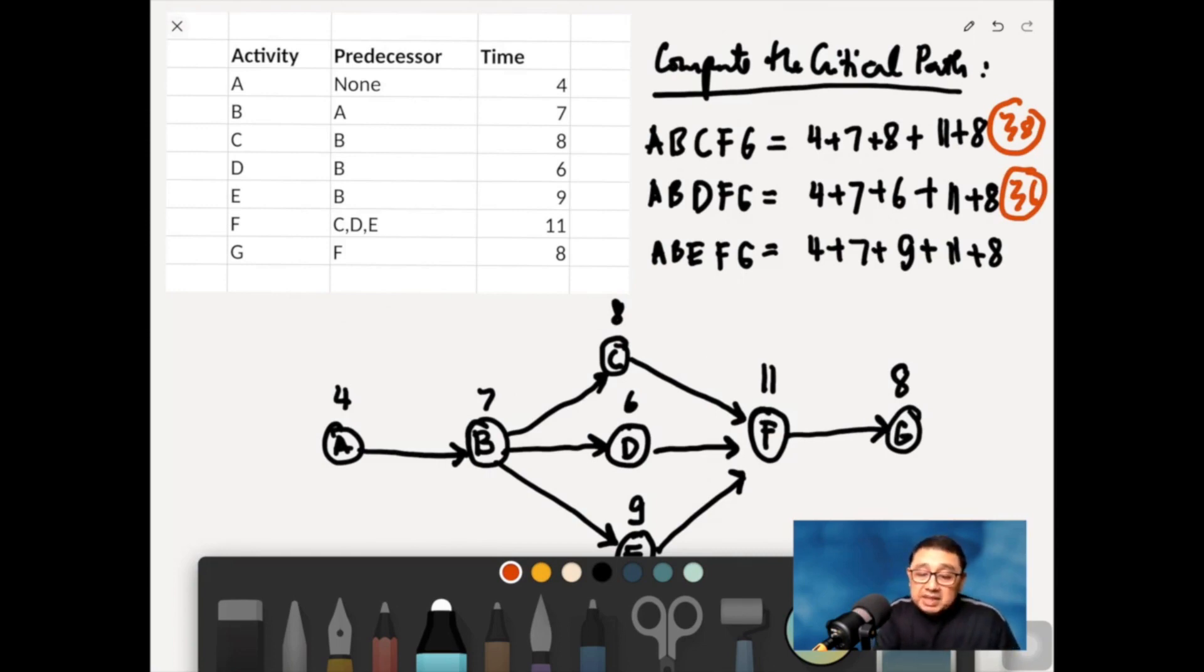And then 4 plus 7 is 11, plus 9, is 20, plus 11. That's 31, plus 8, is 39.